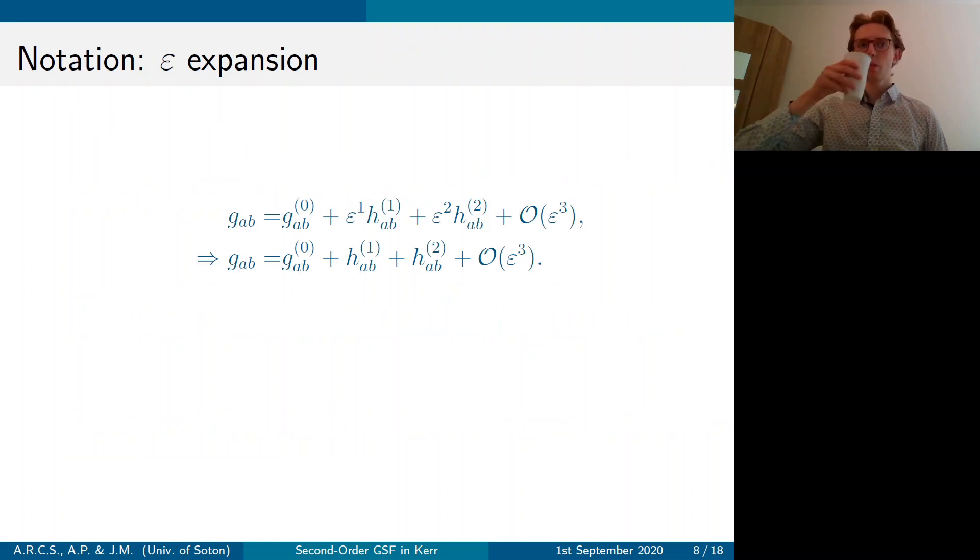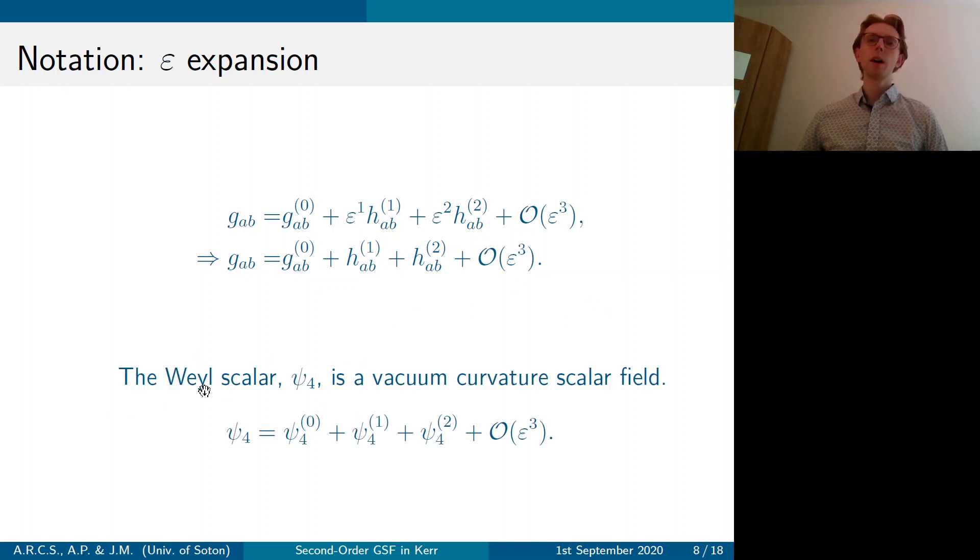So a quick note on notation. I'm going to absorb the epsilon dependency into the tensors. So the superscript in curly brackets denotes the proportionality to epsilon. And I'm going to talk a lot about the Weyl scalar psi 4, which is a vacuum curvature scalar. So basically, what you need to know about this is it contains the information about the gravitational waves being emitted by the system. And then we're going to take an expansion of psi 4 in terms of epsilon like this.